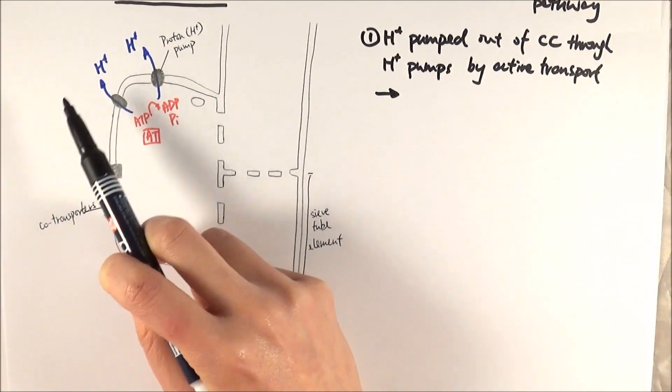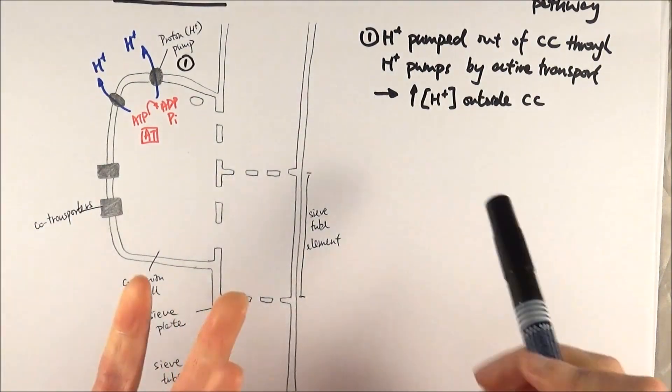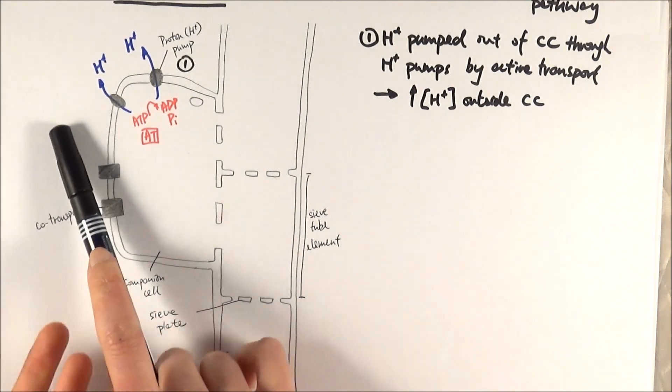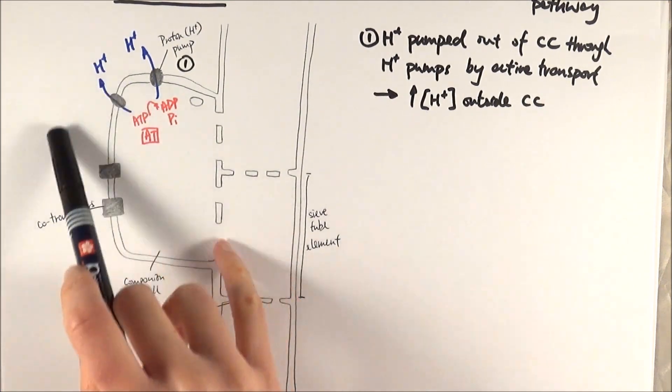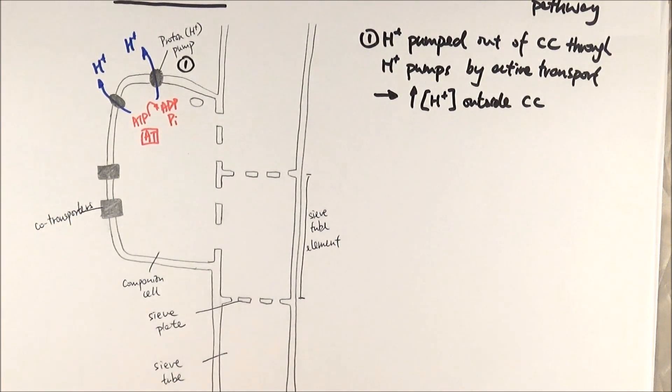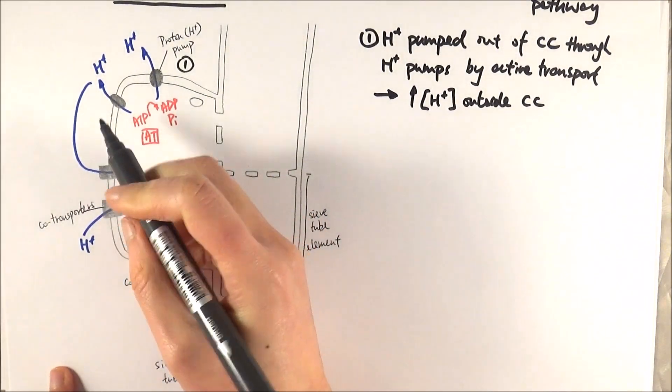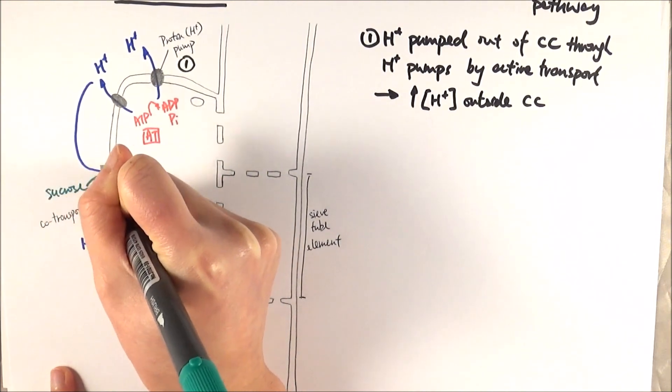This increases the proton concentration outside the companion cell. Because there's an increased proton concentration outside, you've generated a proton concentration gradient. The protons want to come back in through the co-transporters. But the funny thing about co-transporters, as the name implies, is they can't just transport one thing - they have to co-transport something else. In this case, it will be sucrose. The co-transporter won't work with just proton or just sucrose, but only if you have both things together.